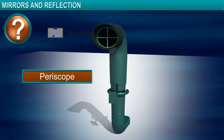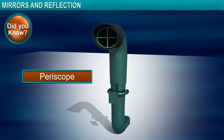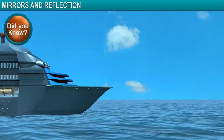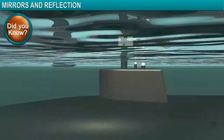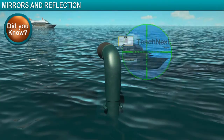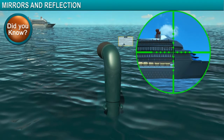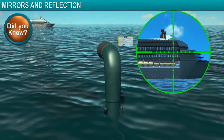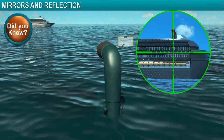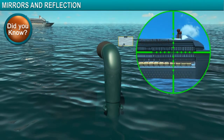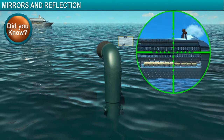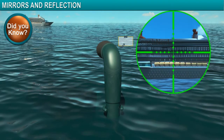Did you know? A periscope is an instrument for observation from a hidden position. This instrument is used in submarines to view objects on the surface above, and it works on the concept of reflection in plane mirrors.